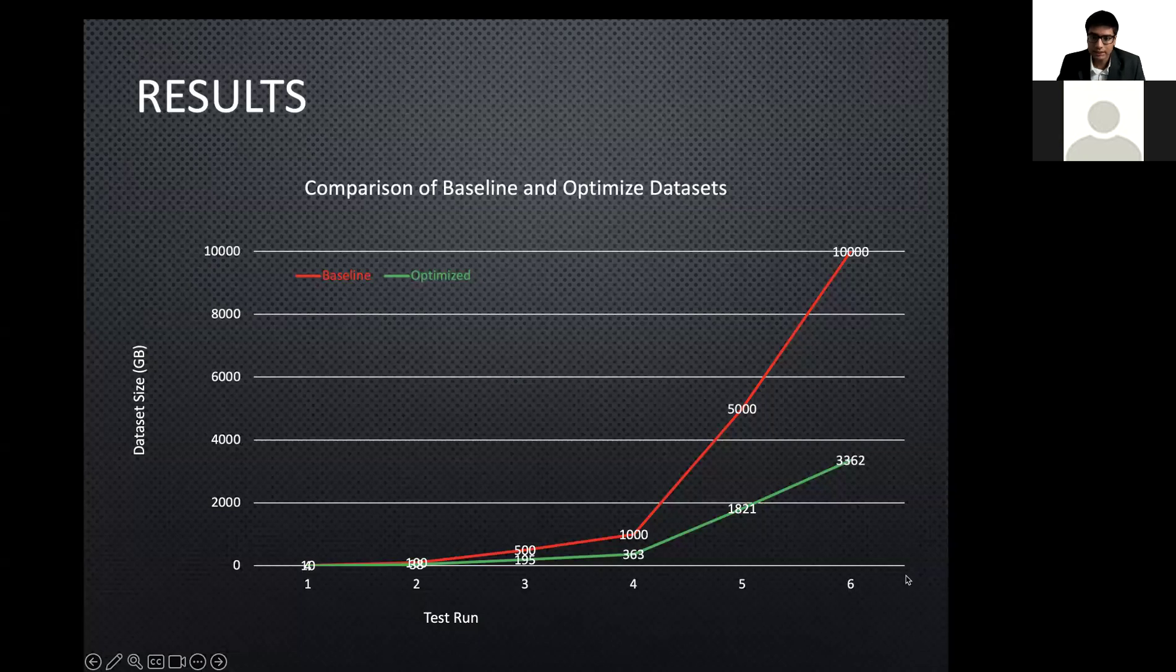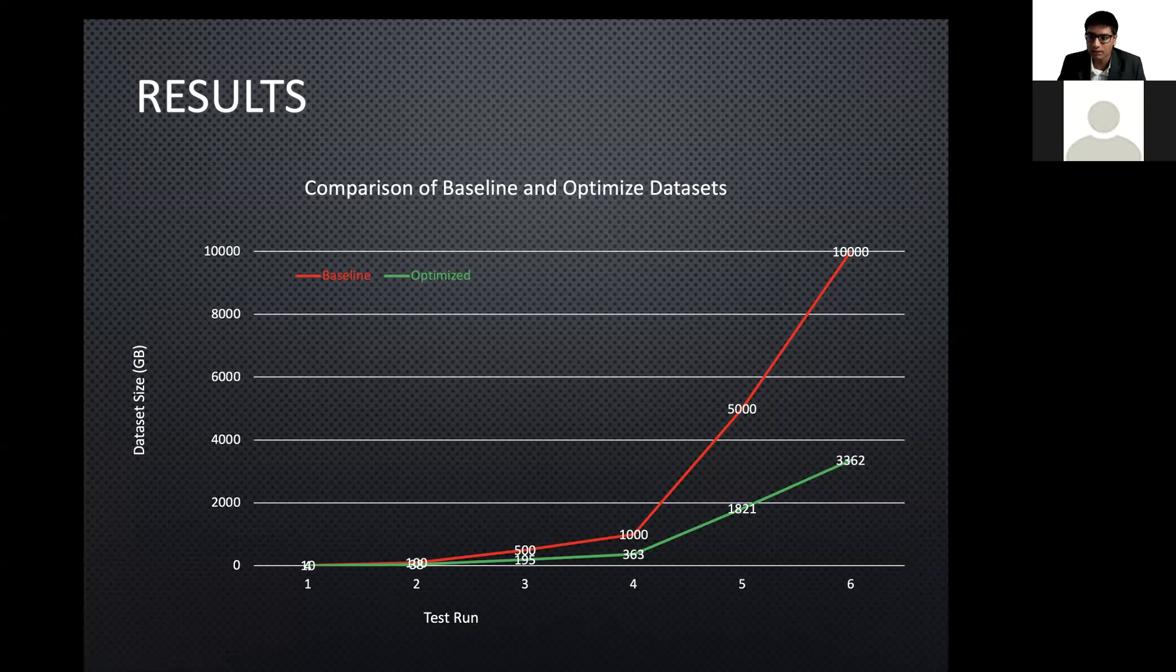Results. These experimental results show the comparison of baseline and optimized size of datasets used for model training. The size of the input dataset using the Azure Machine Learning Platform as shown on the left. Multiple tests are run with different dataset ranges from gigabytes to several terabytes. The red shows the baseline size of the dataset without applying a proposed method. The green shows the size of model training dataset after applying our approach.